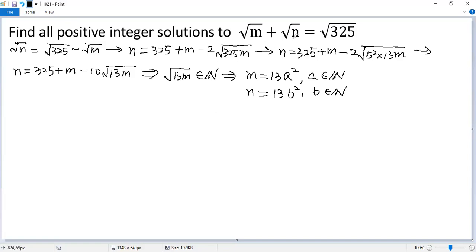Then we plug in the given equation. So we get square root of 13a squared, which is m, plus square root of 13b squared. The right side, square root of 5 squared times 13. So we get square root of 13 times a plus square root of 13 times b. The right side, 5 times square root of 13.